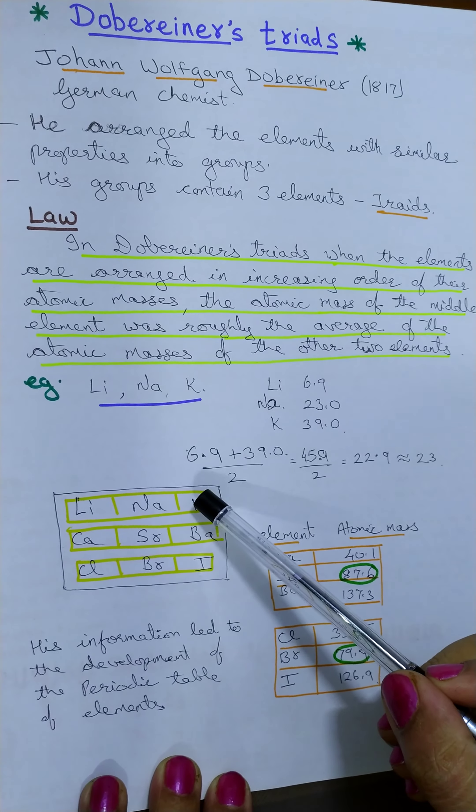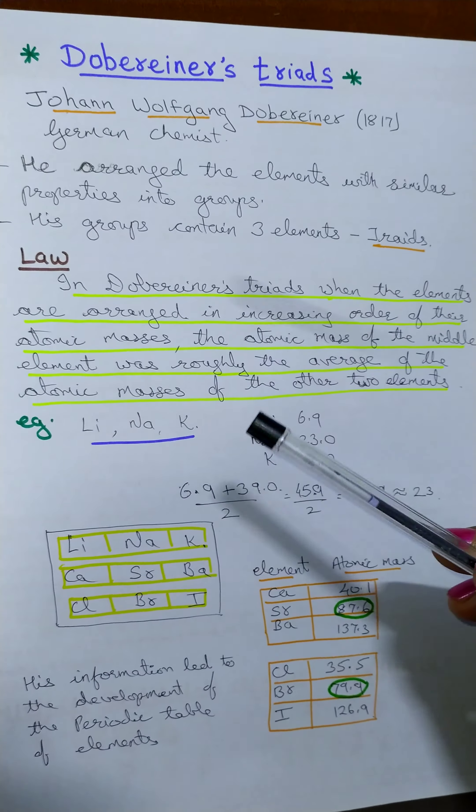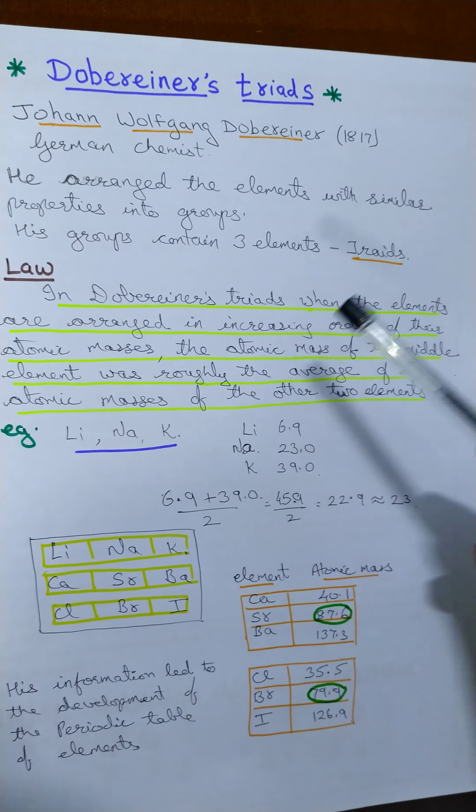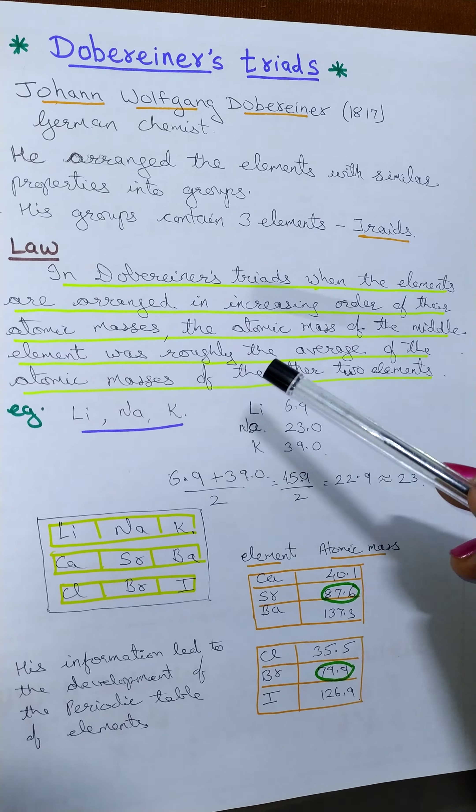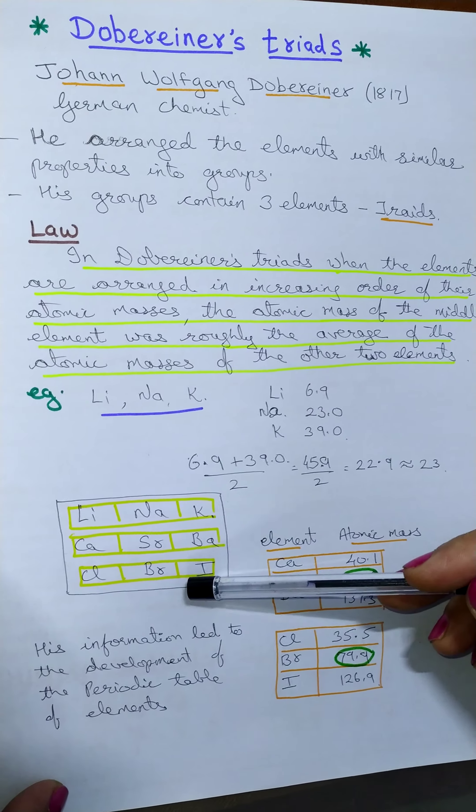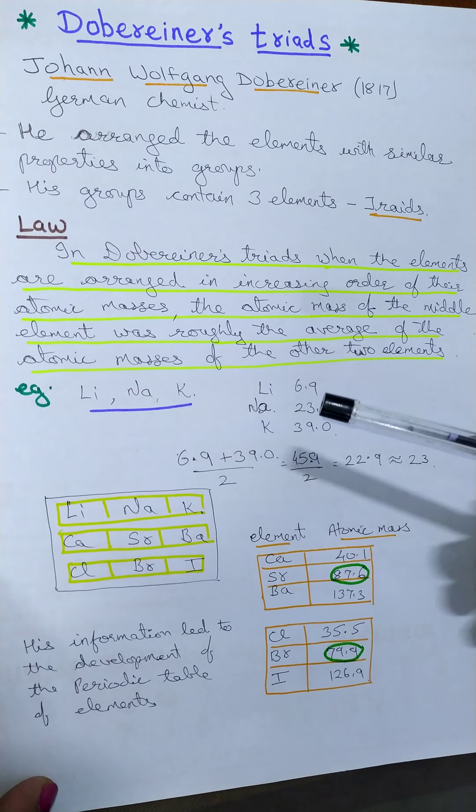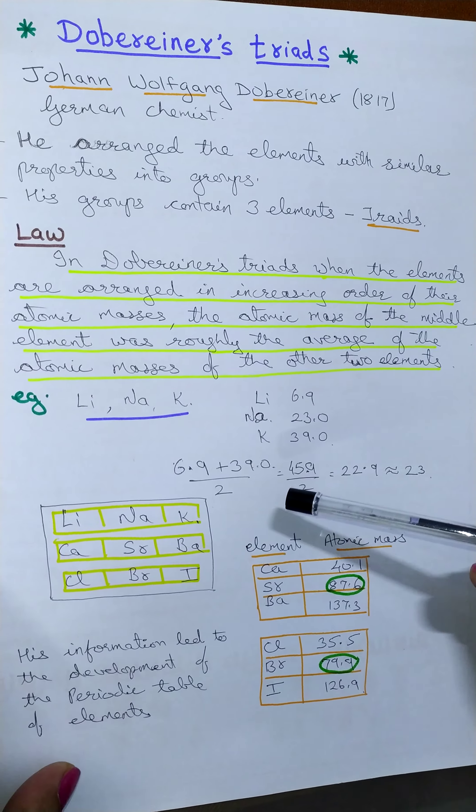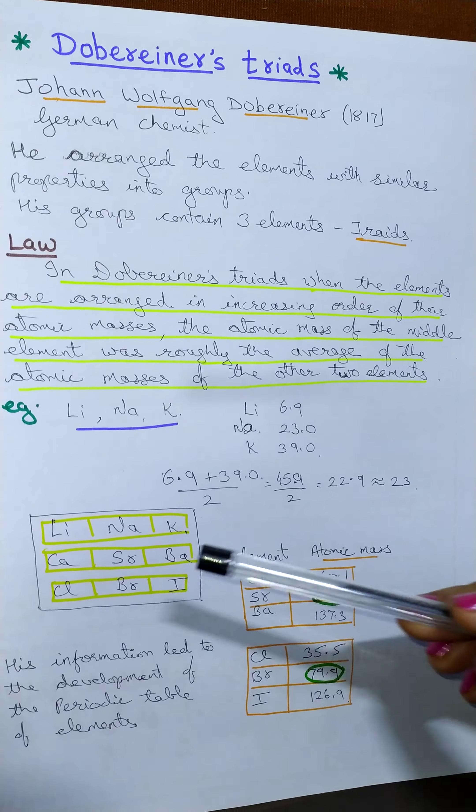It was followed only by these three triads. Though Dobereiner tried the classification, he gave the triads and his law was followed by some elements. Three triads were formed, but for further elements having higher atomic mass, they did not follow Dobereiner's triads. Hence,